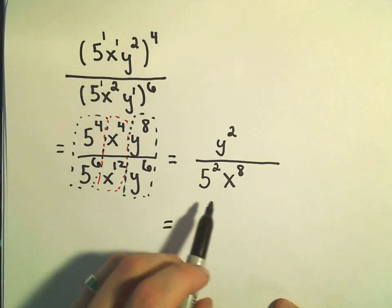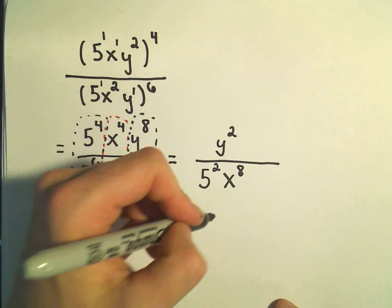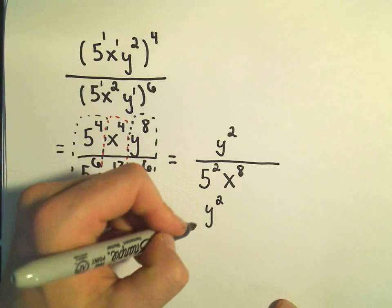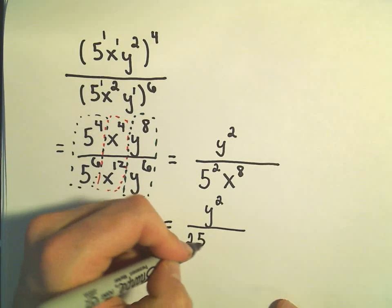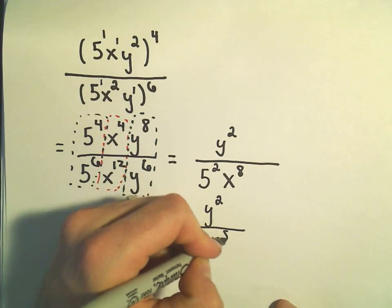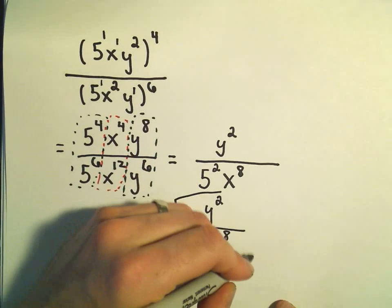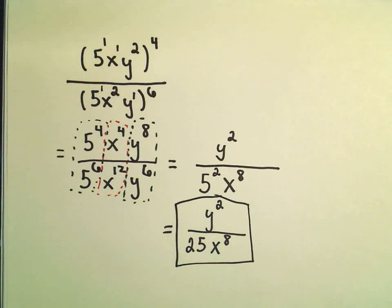And then usually the only kind of simplification is just the numerical part. So we've got y squared on top. 5 squared is 25. And then we have x to the 8th left over. And that would be how this original expression would simplify down.